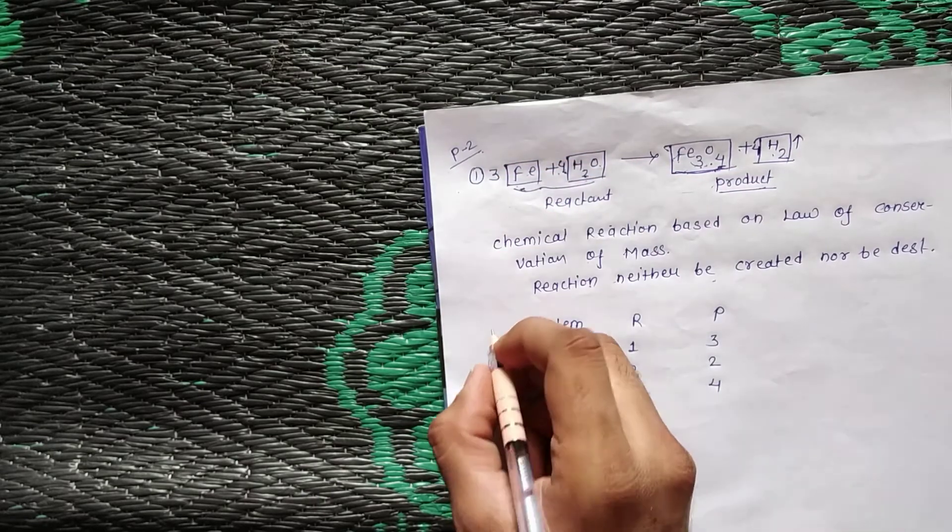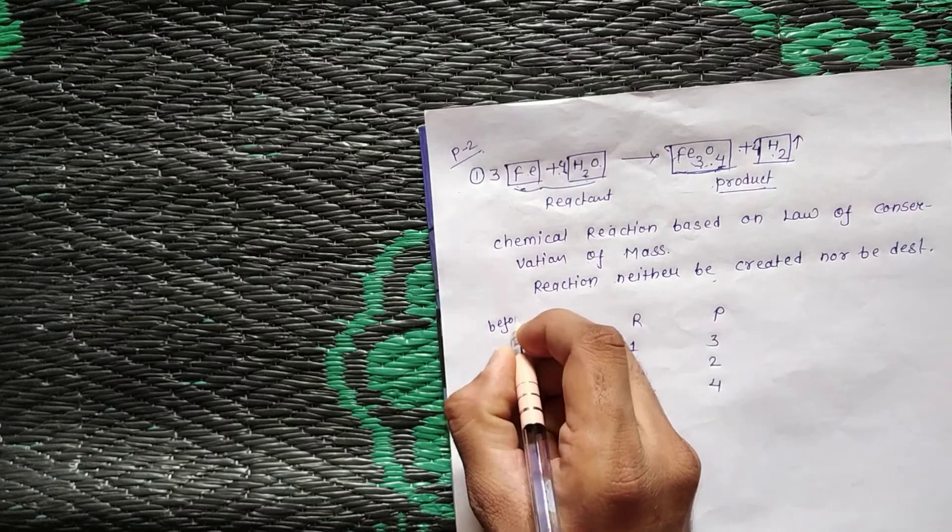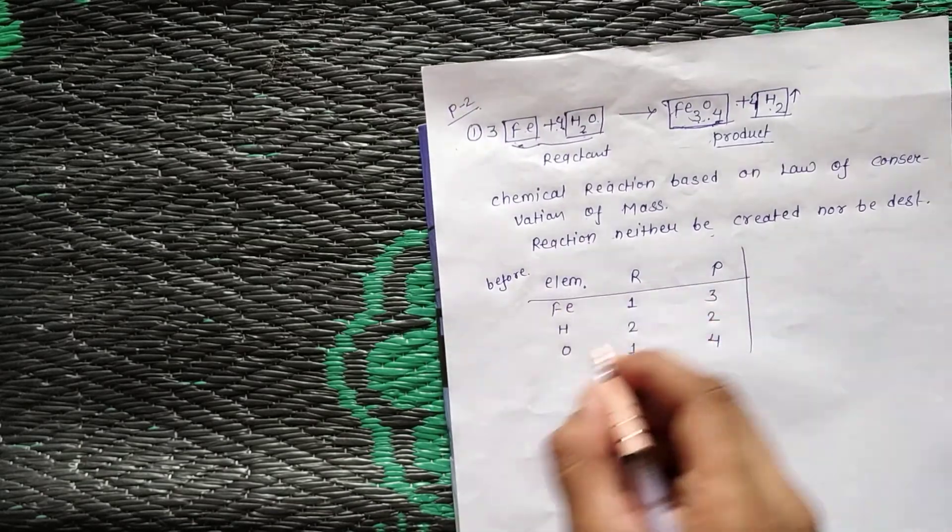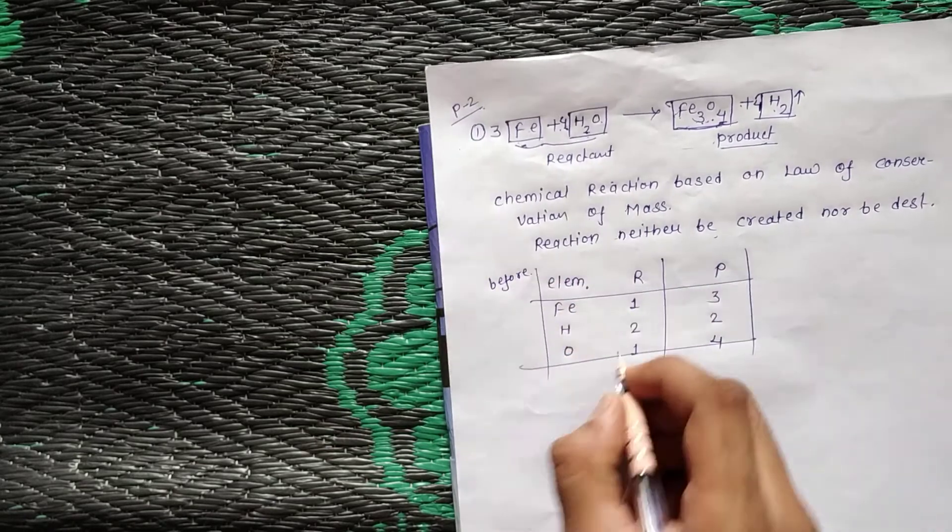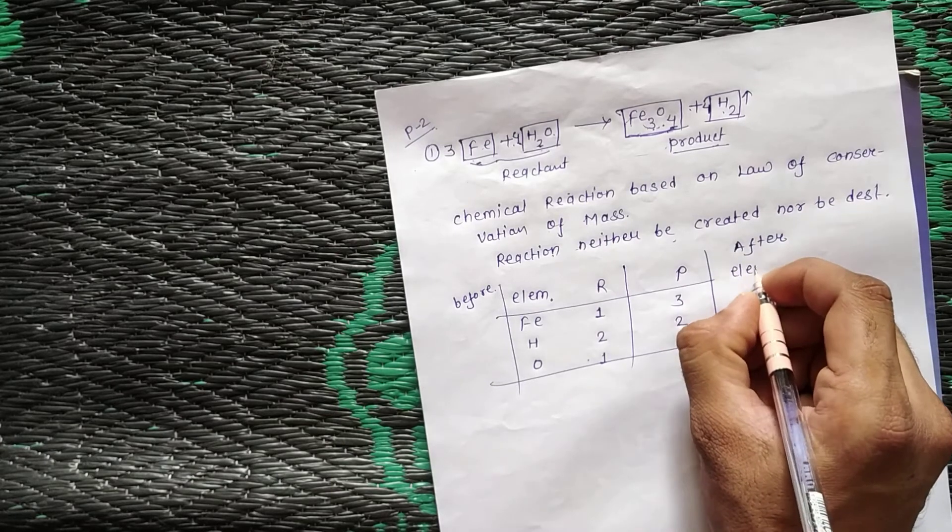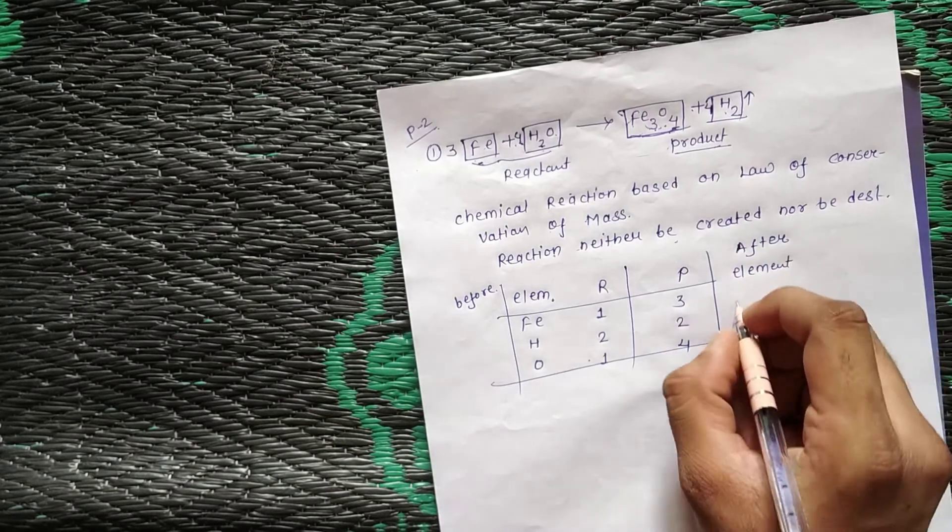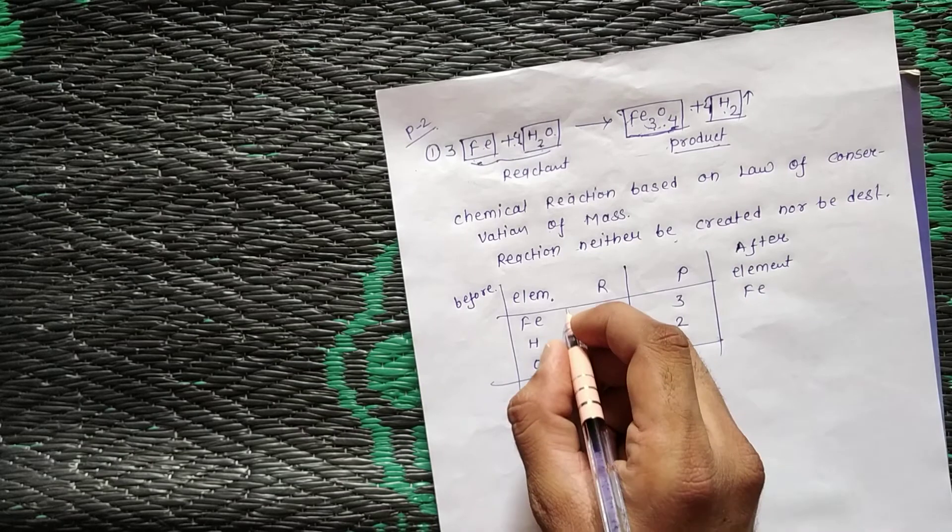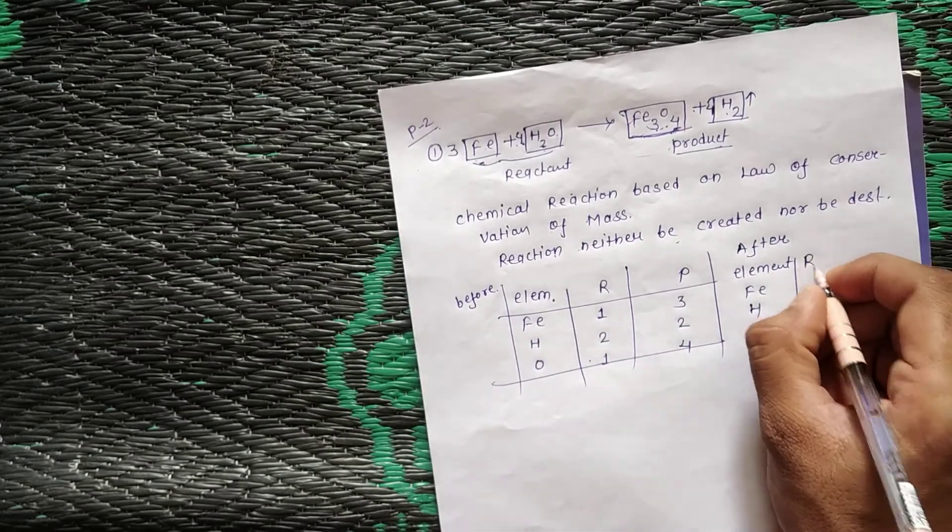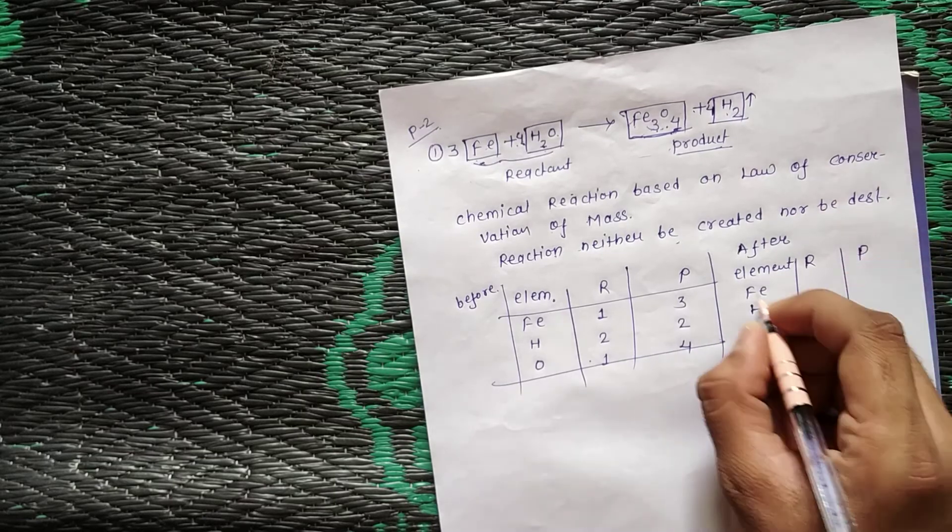Now we have to follow the balancing procedure. Before balancing, we list the elements: first iron, second hydrogen, third oxygen, with reactant and product columns.